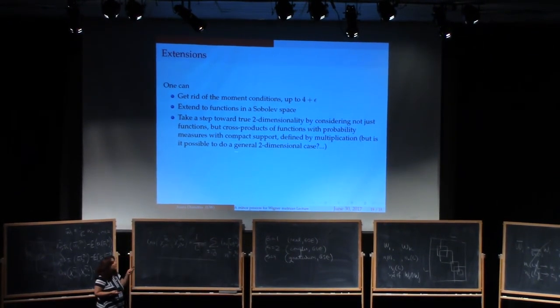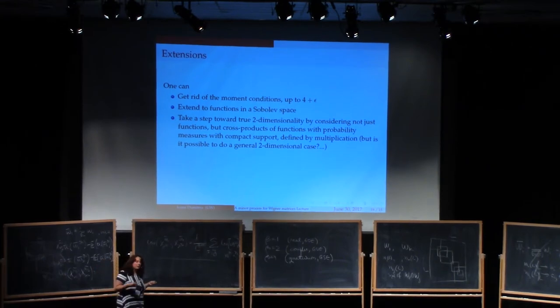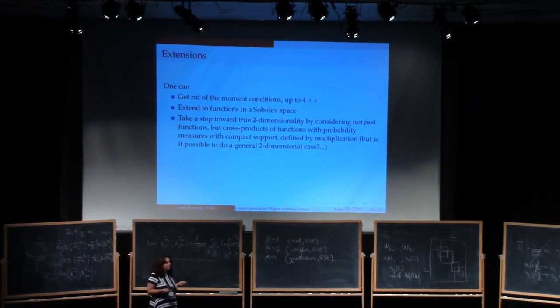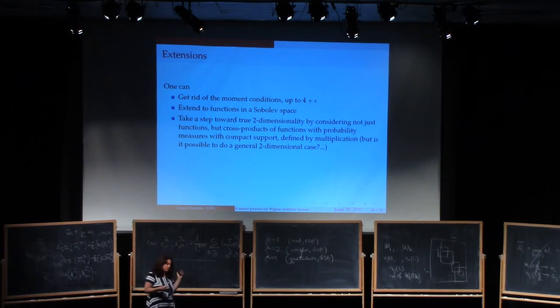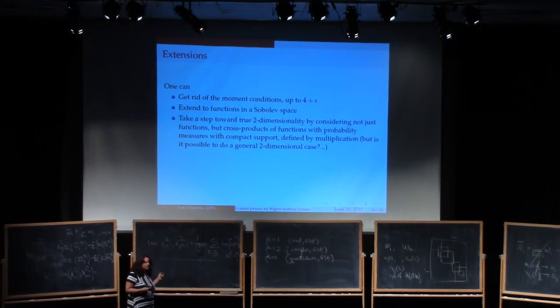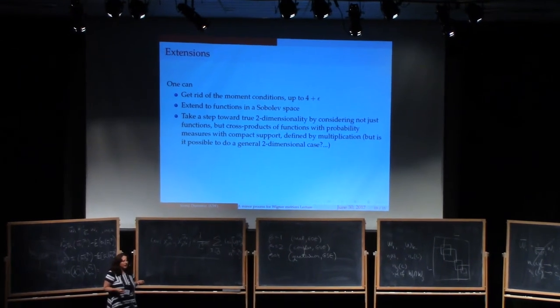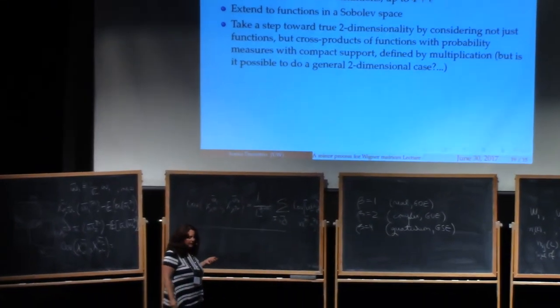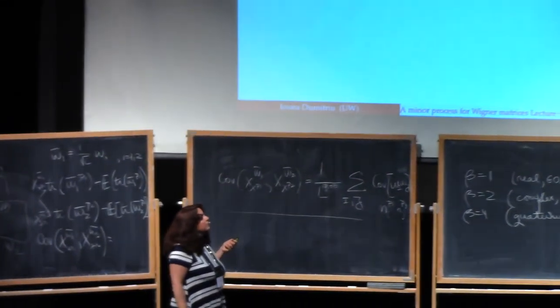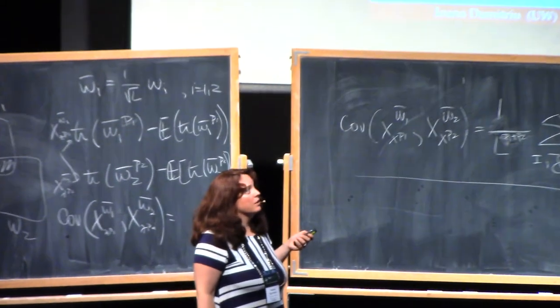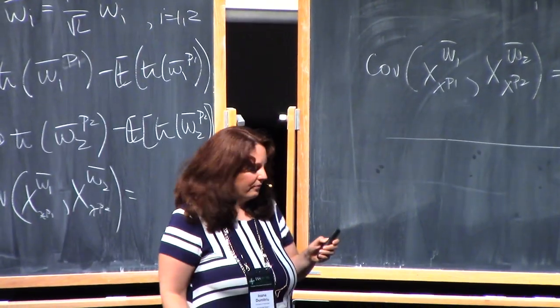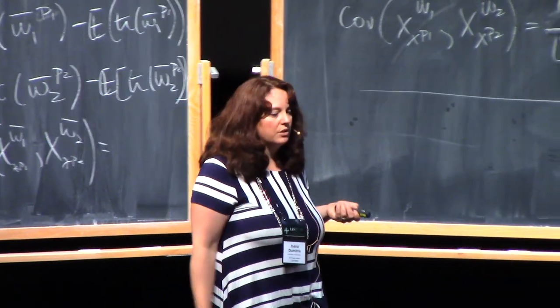So this extension is done in a paper that I have with, well, for the Wishart case, but it can be done in a very similar way for the Wigner case, in a paper that I have with Elliot Paquette. And we'd be very interested to know if you can actually go all the way and define truly a two-dimensional object.